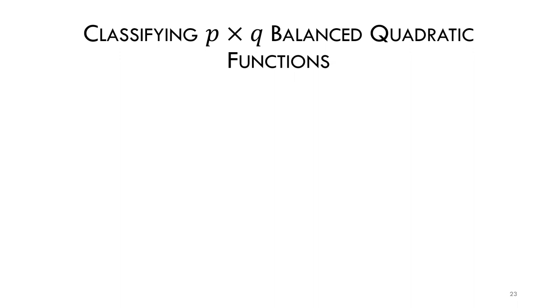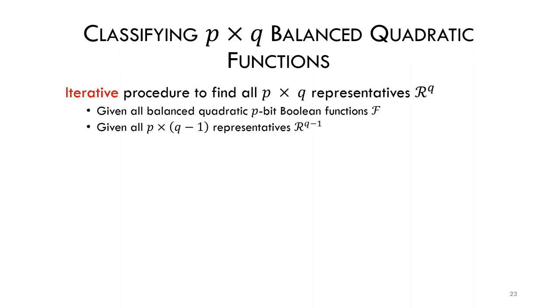Thanks to our adaptation to the affine-equivalent representative algorithm, we can do this process iteratively with an increasing number of output bits. We start from all p-by-1 Boolean functions, combine them to find p-by-2 functions and reduce them to their representatives.